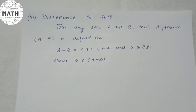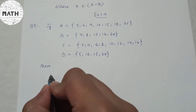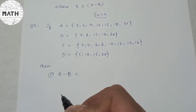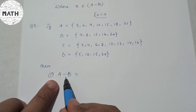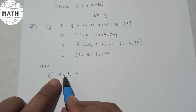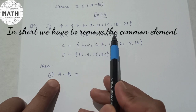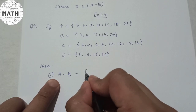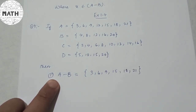Given A = {3, 6, 9, 12, 15, 18, 21}, B = {4, 8, 12, 16, 20}, C = {2, 4, 6, 8, 10, 12, 14, 16}, D = {5, 10, 15, 20}. For number 1, A minus B: remove elements of B from A. The only common element is 12, so removing 12 gives A minus B = {3, 6, 9, 15, 18, 21}.